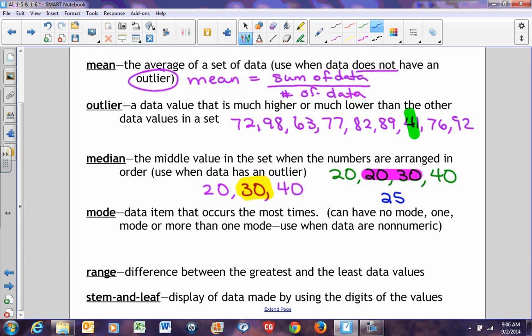The mode is the data value that occurs the most times. You can have no mode, one mode, or more than one mode. You use this when data is non-numeric. What is meant by non-numeric? Things that are opinion questions. Non-numeric means opinion. For example, what's your favorite color? You can't really find a mean or a median for it, so it's just mode. If 18 people choose red as their favorite color, then the mode would be 18.